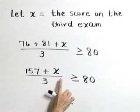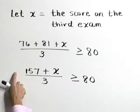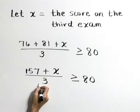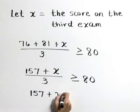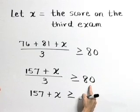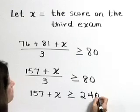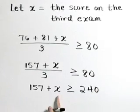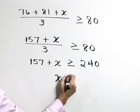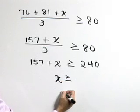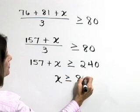As a next step, let's multiply both sides by three. Multiplying the left side by three cancels the three out of the denominator, giving us 157 plus X. Multiplying the right side by three: 80 times three is 240. As a last step, let's subtract 157 from both sides to get X is greater than or equal to 83, since 240 minus 157 is 83.